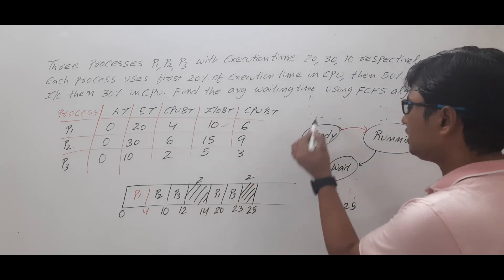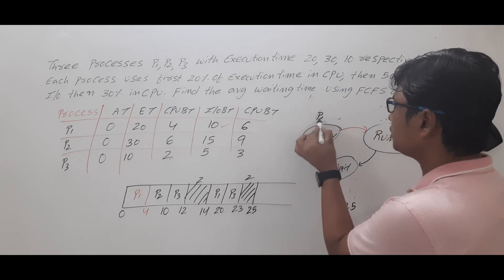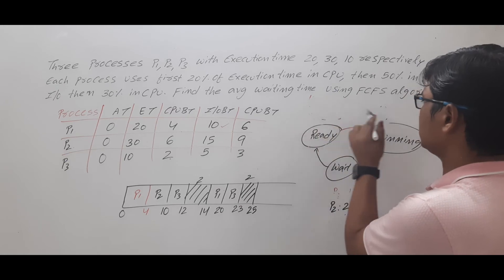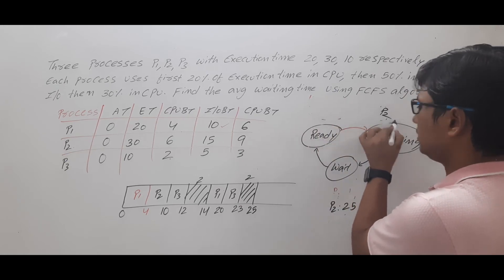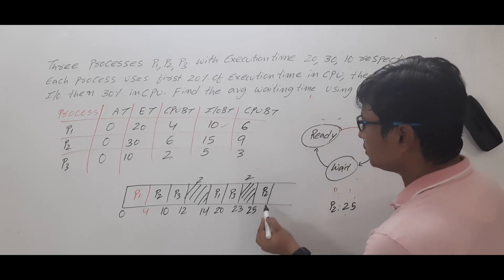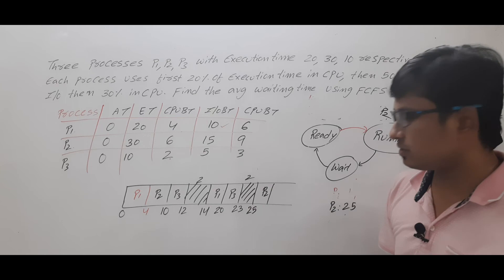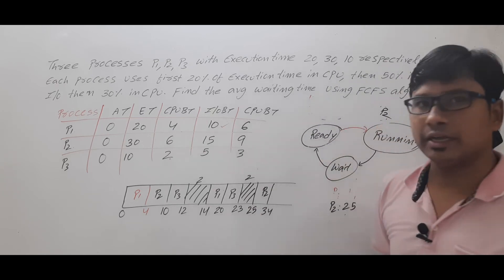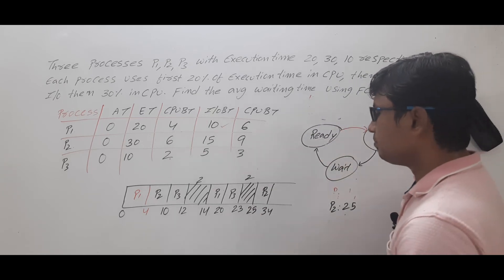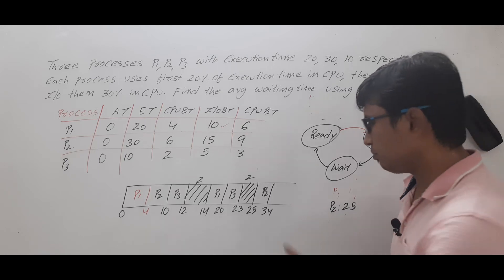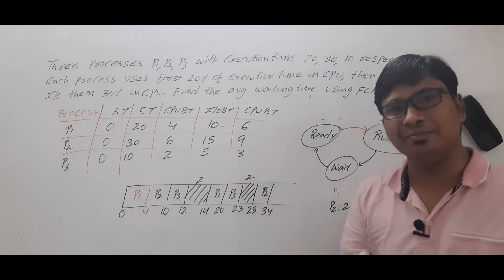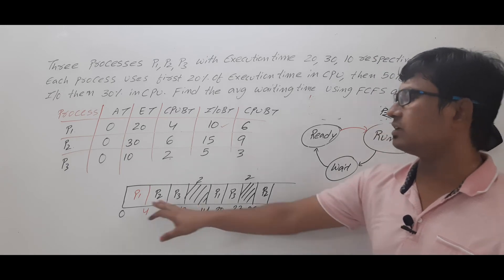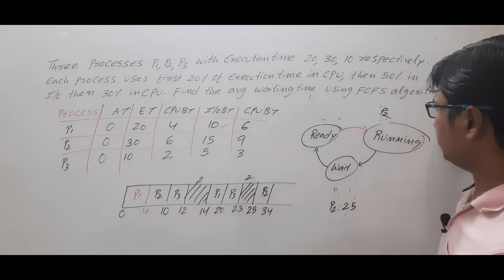At 25 units of time, process P2 comes to the ready state and will be sent to the running state. Process P2 needs 9 units of CPU time. At 25 plus 9 equals 34 units of time, process P2 completes its task. So all three processes have completed by 34 units of time.